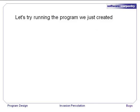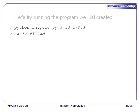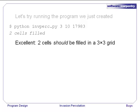Let's try running the program that we created in the previous episode. We say Python invperc.py. We ask for a 3x3 grid for random values in the range 1 to 10, and we give it 17983 as a random number seed because that's what my hands typed when they fell on the keyboard. The program comes back to say two cells have been filled, which is what we'd expect. In a 3x3 grid, we fill the center cell and one other, and then we hit the boundary.